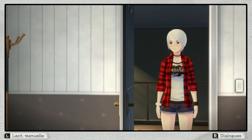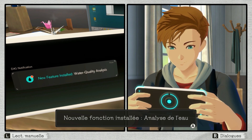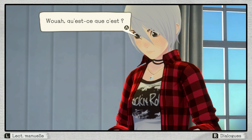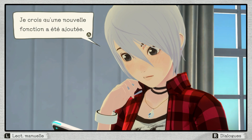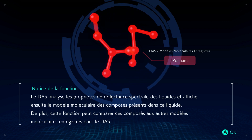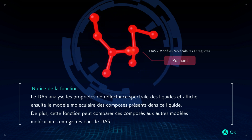Qu'est-ce qu'il y a ? New feature installed: water quality analysis. C'est la nouvelle fonction installée, analyse de l'eau. Regarde, c'est pratique ça. Wow, qu'est-ce que c'est ? Je crois qu'une nouvelle fonction a été ajoutée. Notice de la fonction : le DAS analyse les propriétés de réflectance spectrales des liquides et affiche le modèle moléculaire des composés présents dans ce liquide.